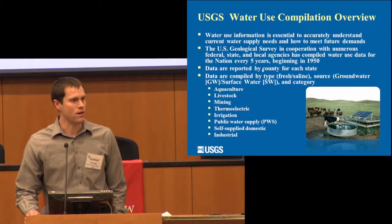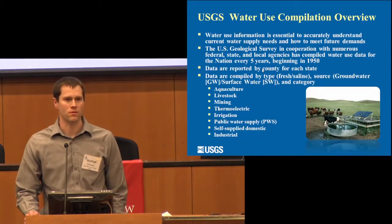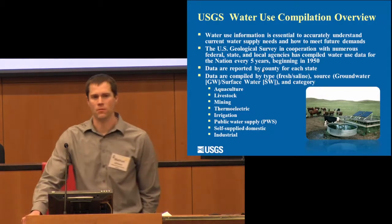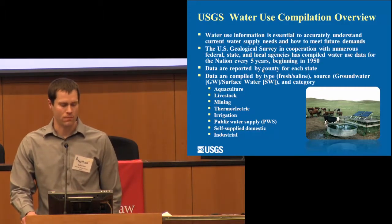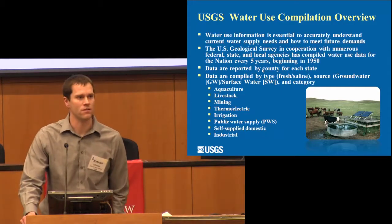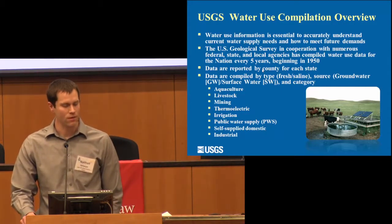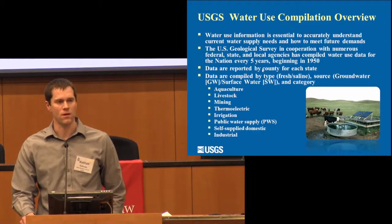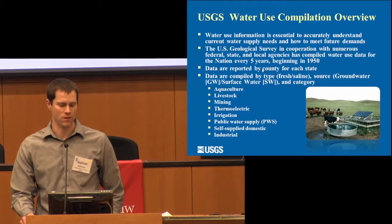Each state reports to the National Water Use Team. I'm the representative for Nebraska, and we do it on a county-by-county basis. The categories we report are aquaculture, livestock, mining, thermoelectric, irrigation, public supply, self-supplied domestic, and industrial. These are reported both by source — groundwater or surface water — as well as whether these are freshwater sources or saline.